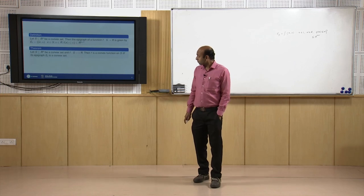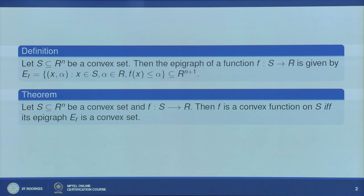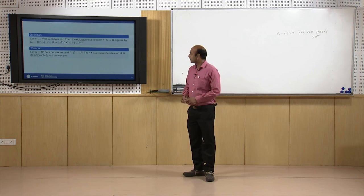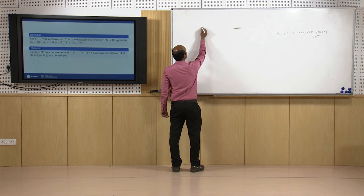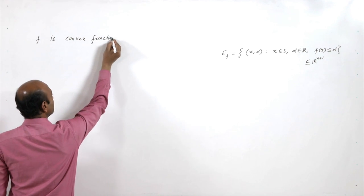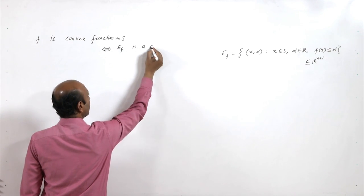The next theorem states that if S is a convex subset of R^n and f is a function from S to R, then f is a convex function on S if and only if its epigraph E(f) is a convex set.